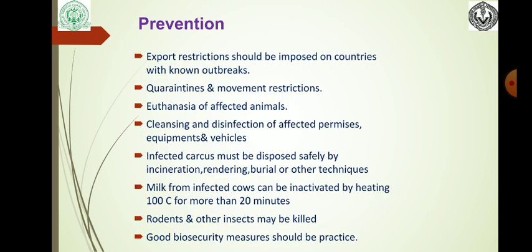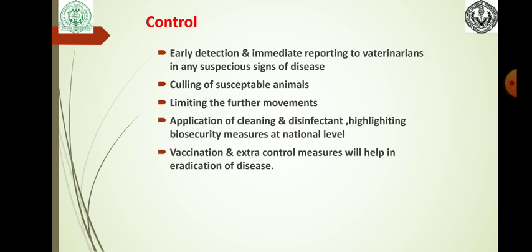Prevention and control: Export restriction should be imposed on countries with unknown outbreaks. Quarantine and movement restrictions, and utility of affected animals, cleaning and disinfection of affected premises, equipment, and vehicles. Infected carcasses must be disposed safely by incineration or rendering. Milk from infected cows can be inactivated by heating at 100 degrees Celsius for more than 20 minutes. Rodents and other insects may be killed. Biosecurity measures should be practiced. Early detection and immediate reporting to veterinarians in any suspicious case, culling of susceptible animals, and limiting further movement. Cleaning and disinfecting, and highlighting biosecurity measures at national level, vaccination and extra control measures will help in eradication of the disease.